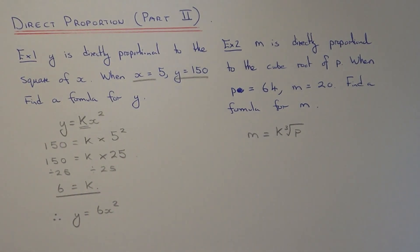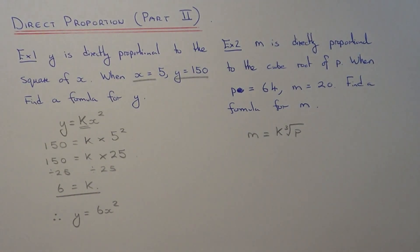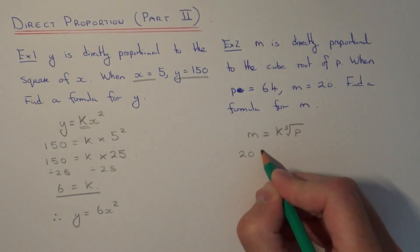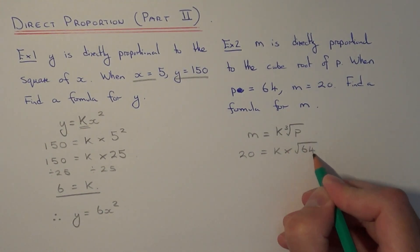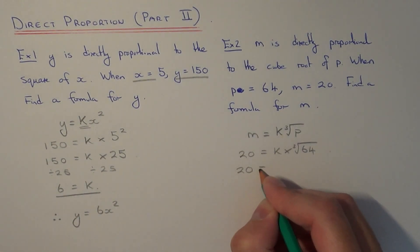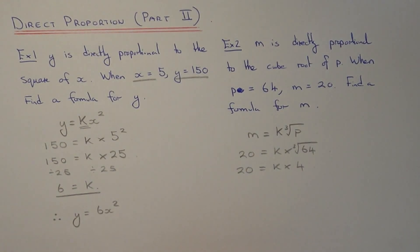We just need to substitute our numbers into our formula so we can figure out what our constant is. So m is 20, and k is what we're trying to find. So it's k times by the cube root of 64. The cube root of 64 is 4, because 4 times 4 times 4 is 64. So we've got 20 equals k times 4.